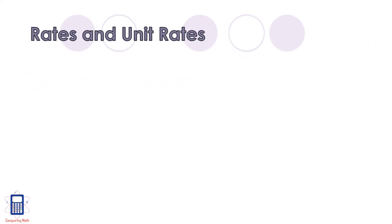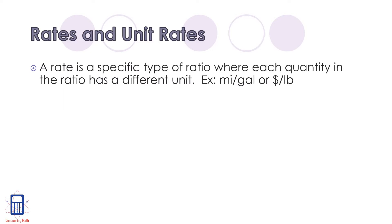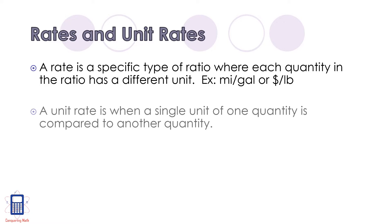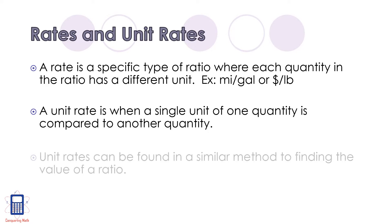Let's talk about rates and unit rates quickly. A rate is a specific type of ratio where each quantity in the ratio has a different unit, for example miles per gallon or dollars per pound. A unit rate is when a single unit of one quantity is compared to another quantity. Unit rates can be found in a similar method to finding the value of a ratio, so we'll be dividing the two numbers by each other to simplify down into a unit rate.